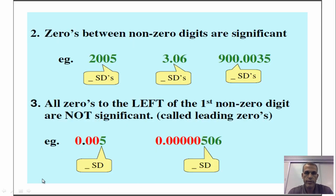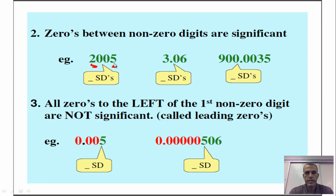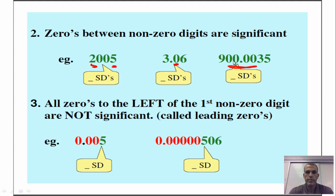Rules number two and three are grouped on the same slide. Zeros between non-zero digits are significant. The two and the five, I refer to as the bookends — the zeros are in between, so those count as significant digits. You also have a group of zeros bookended between non-zero numbers. Take a minute and figure out your answer before the next slide.